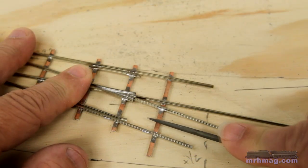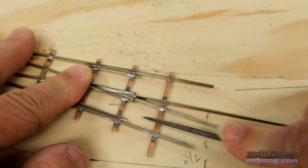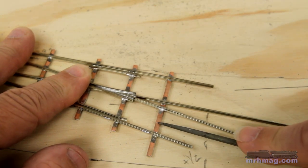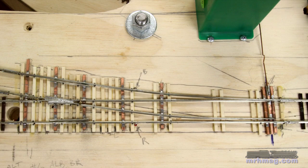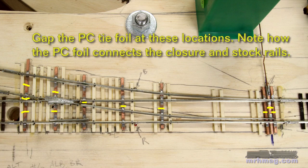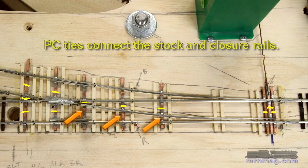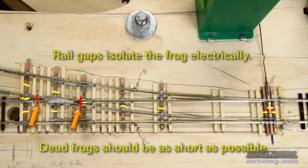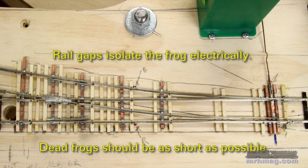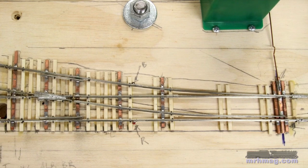I use a small triangular cross section jeweler's file to make insulating gaps in the PC ties foil. I make DCC friendly turnouts. In these the point and closure rails are electrically connected to the adjacent stock rails. The points are not used to route power to the closure rails or frog. In a DCC friendly turnout the frog needs to be isolated electrically. Frogs can be either unpowered or dead or they can be powered through switch machine contacts or with a frog juicer from Tam Valley Depot.